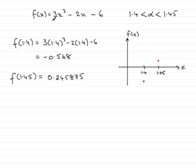Now because a cubic graph is continuous, that means there's no breaks, certainly across this interval, then the curve must have crossed over the x axis at some point.